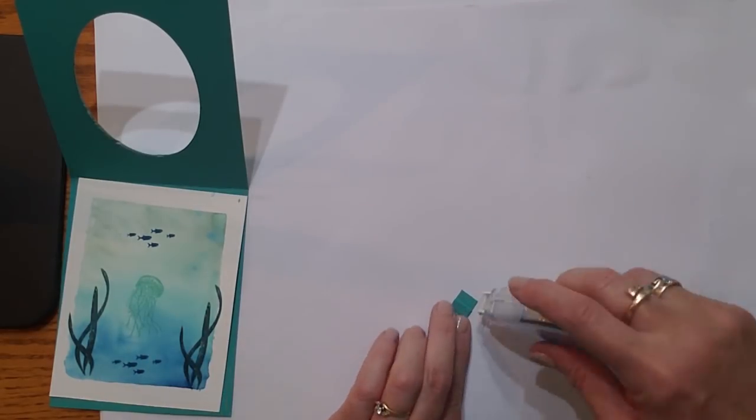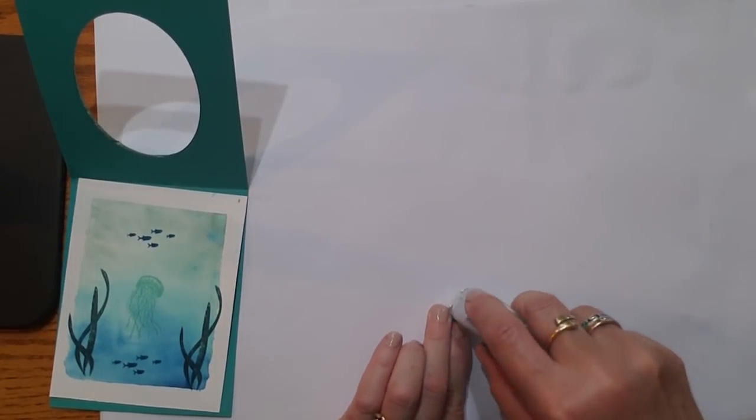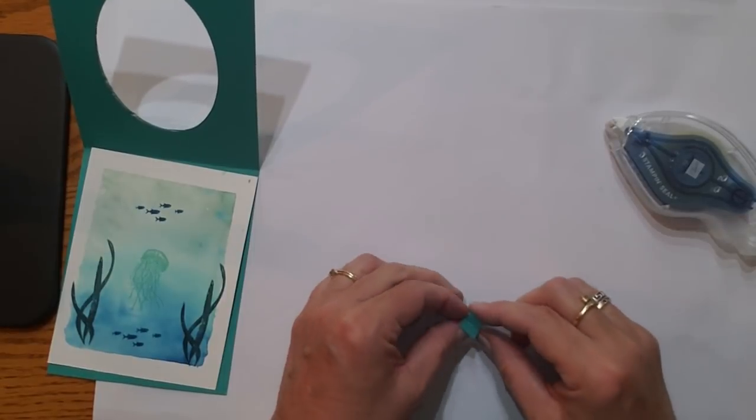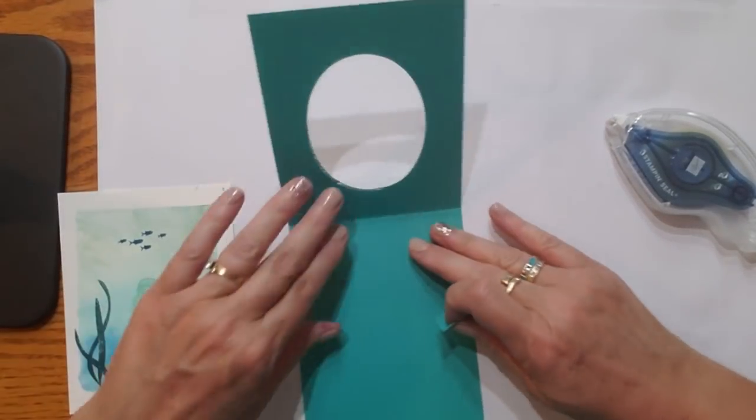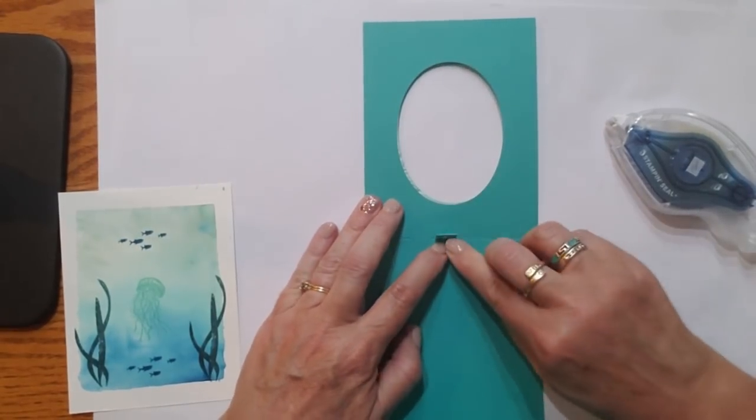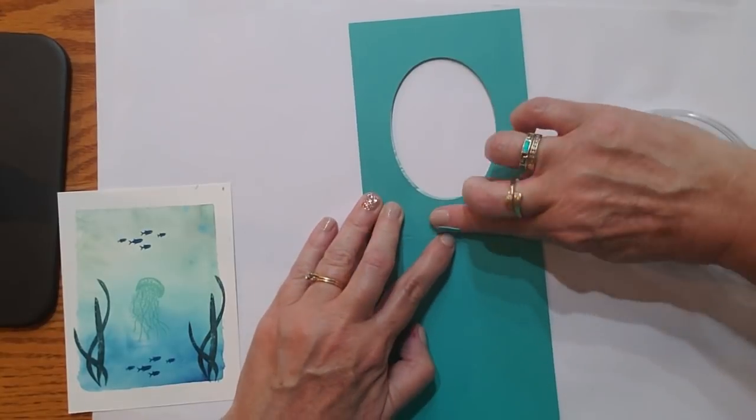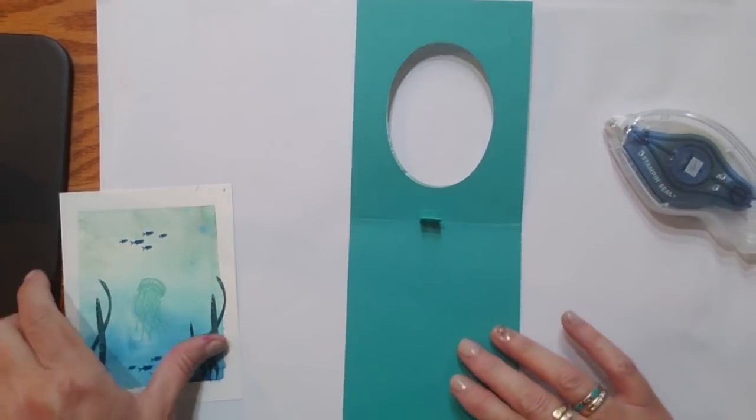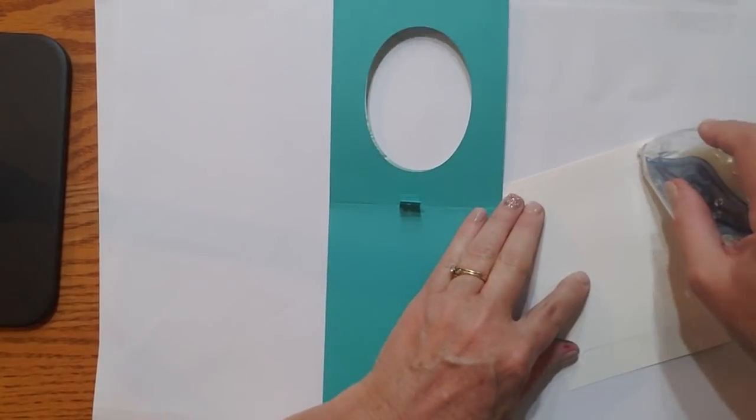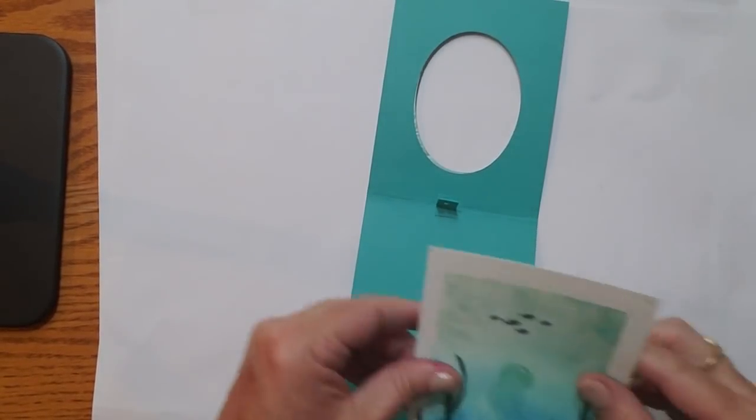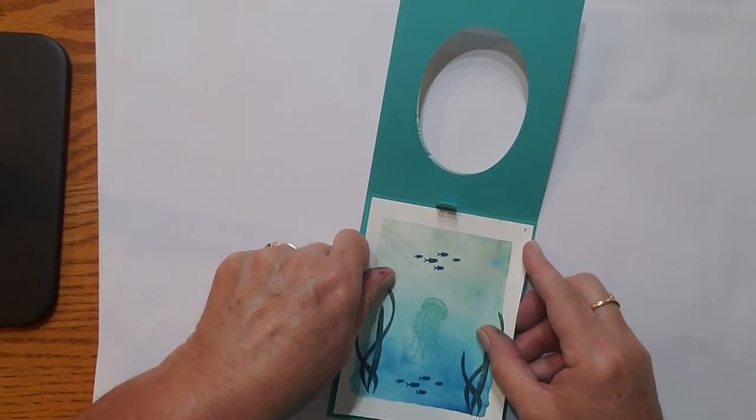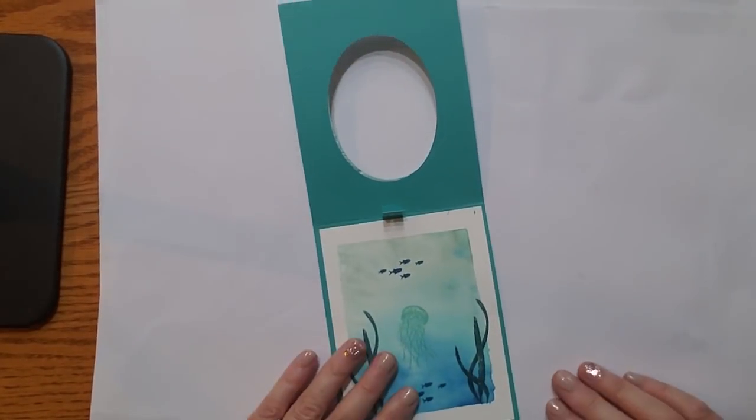And now I'm ready to adhere this down. To do that, I'm going to put adhesive. And I'm using the Stampin' Seal Plus because it's a little more sturdy. You could use liquid glue here as well. And I'm going to put that right in the middle of my card on the fold line so that the flaps are on either side of that fold line. And then I'm going to put this background on. This way it covers a little bit of that mechanism. So we've got that done.